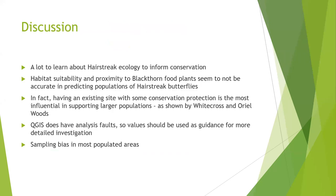To discuss the results, it's clear that we have a lot to learn about hairstreak ecology to inform conservation. Habitat suitability and proximity to blackthorn food plants seem not to be very accurate in predicting populations of hairstreak butterflies. Having an existing site with some conservation protection is more influential in supporting larger populations, as shown by White Cross and Oriel Woods. QGIS does have some analysis faults, but the values, while they shouldn't be seen as completely concrete, should be used as guidance for more detailed investigation.